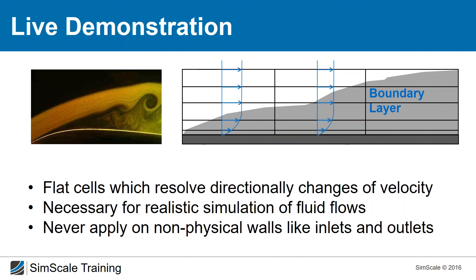Giorgio asks how the boundary layer mesh is closed near inlets and outlets. Our parametric hex mesh is based on SnappyHexMesh, so it will collapse layers based on the angle you define. If you added layers on inlet surfaces, it would try to create them, but it is better not to since the flat elements there would resolve the wrong gradient.